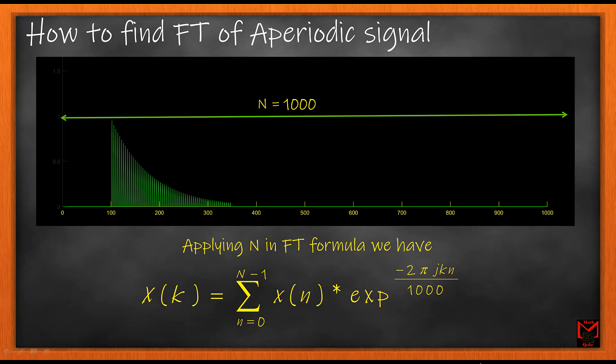Next, the non-periodic signal occupies only space from 100 to 350 in this signal. Applying this in our Fourier formula, we have the cyclic FT with k ranging from 1 to 1000.